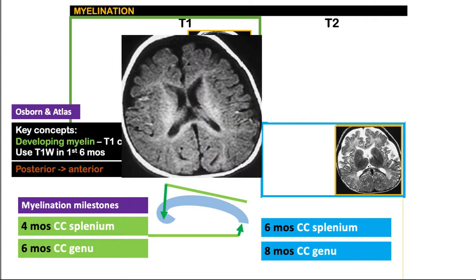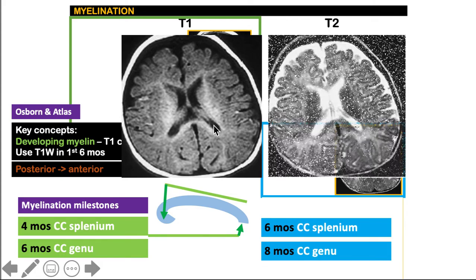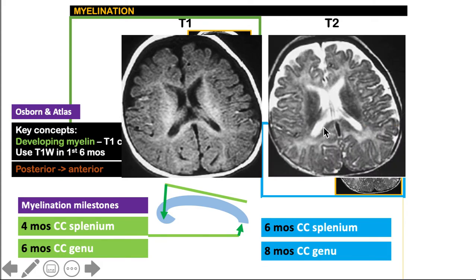Let's take an example. This is a T1-weighted image — could this be a newborn? We see hyper-intensity on the corpus callosum, so this must be an older child, at least four months old. When we check the T2, there is already hypo-intense signal on the same area, so this must be a child who is six months of age.